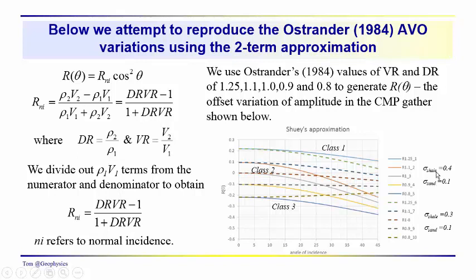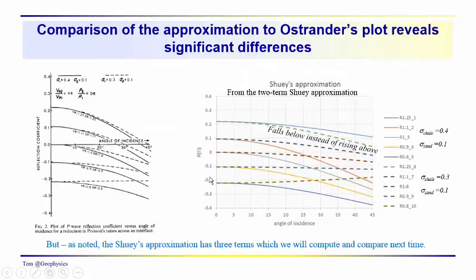We've got two different sets of curves generated with different values for the Poisson's ratio in the shale and the Poisson's ratio in the sand: 0.4 and 0.1 as we noted before, and 0.3 and 0.1. You can see the 0.3 and 0.1 lines kind of fan out from 45 degrees towards zero. Whereas the larger difference in Poisson's ratio, we get this significant drop for all classes, for all zero offset reflections. This would be the set of curves that we'd be comparing with Ostrander.